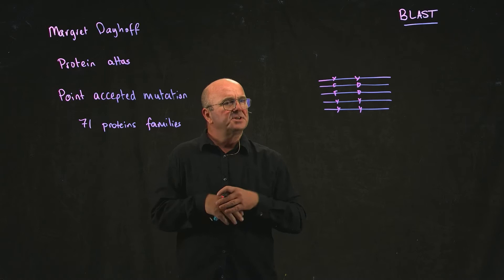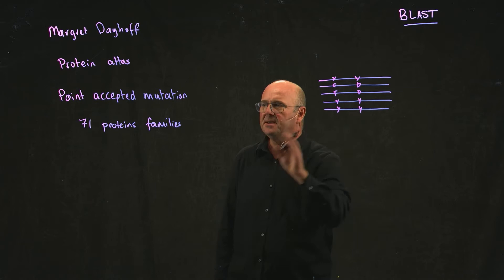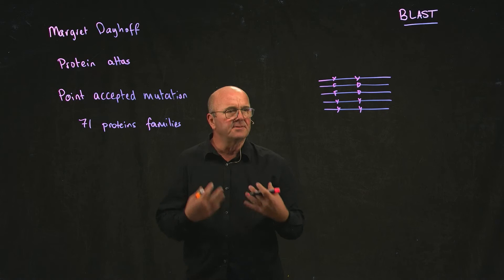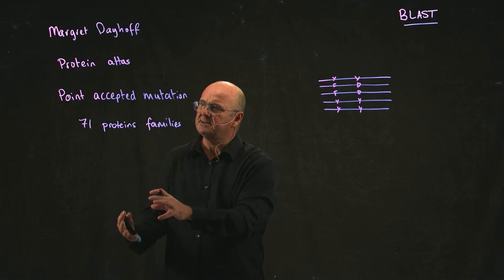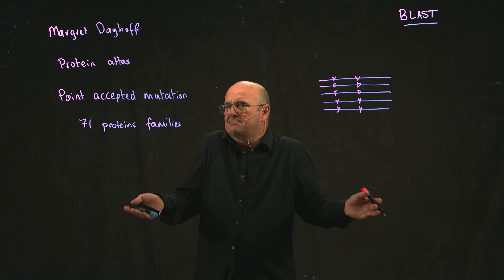She calculated the frequencies of going from every amino acid to every other amino acid in groups of really closely related proteins. The idea is, let's let evolution tell us how hard it is for proteins to switch from tyrosine to phenylalanine or tyrosine to aspartic acid.